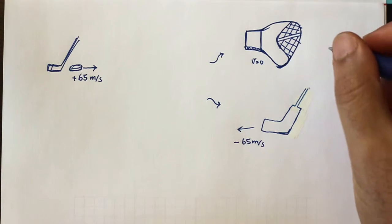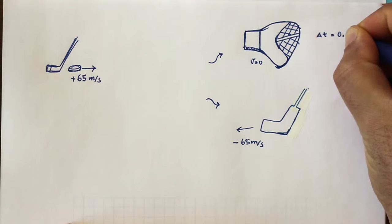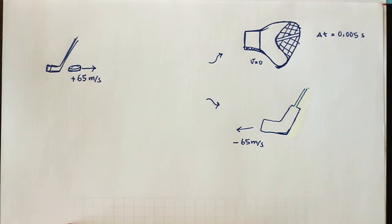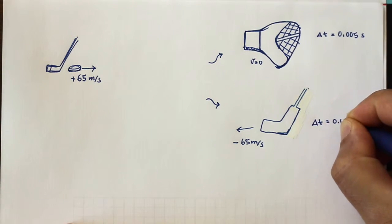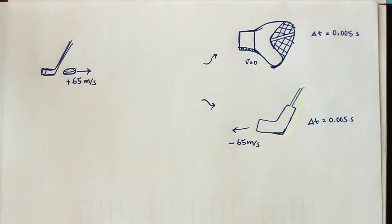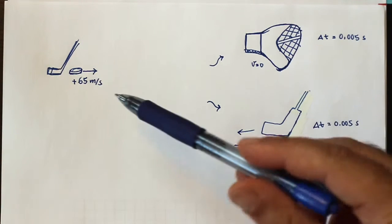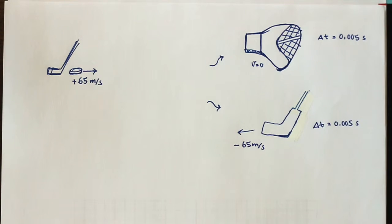We're asked: if the time it takes for him to stop it is 5 milliseconds, or 0.005 seconds — or the time it makes contact with the stick is the same amount of time — calculate the force being exerted by the puck on the glove or by the puck on the stick. We want the magnitude and the direction of the force.